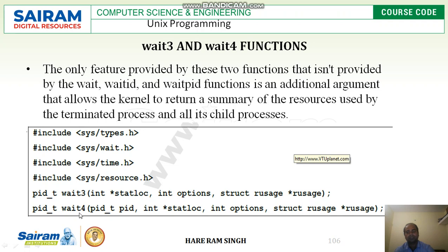pid_t wait4 has four arguments, while wait3 has three arguments. So wait3 and wait4 provide usage information of resources used by a process — specifically the resource usage of the terminated process. This is all about wait3 and wait4 functions.